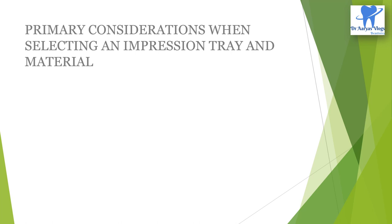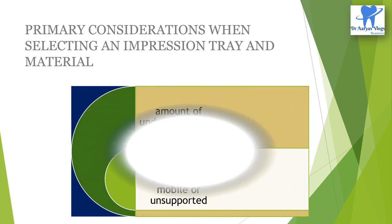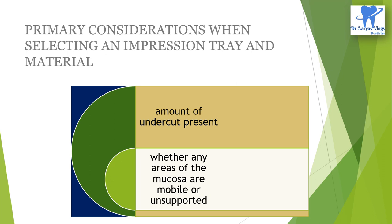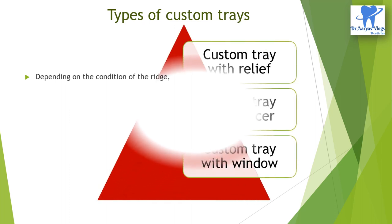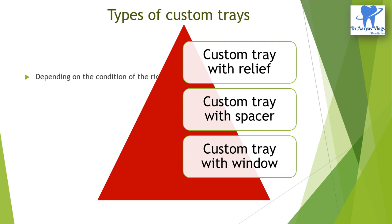The primary considerations when selecting an impression tray and material are: the amount of undercut present, and whether there are any areas of the mucosa that are mobile or unsupported. Depending on the condition of the ridge, custom trays can be classified as: custom tray with relief, custom tray with spacer, and custom tray with window.